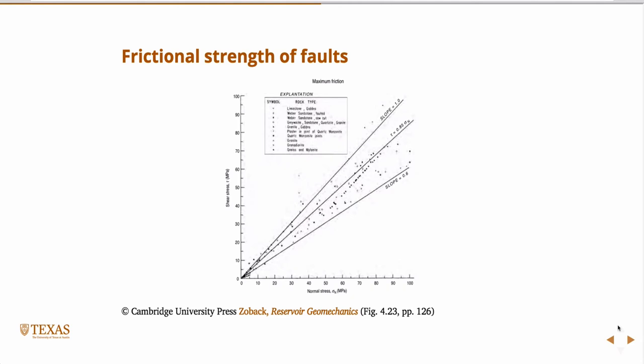So what is that value of mu? It's the coefficient of friction, specifically the coefficient of static friction. Here's a whole bunch of data compiled from all different types of rocks. It may be hard to read, but that's limestone, sandstone, granite, lots of different types of rocks.